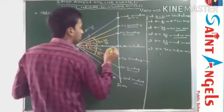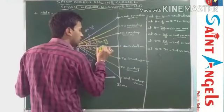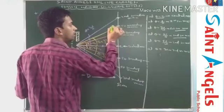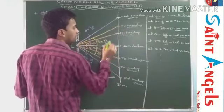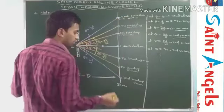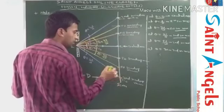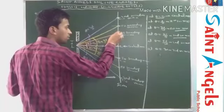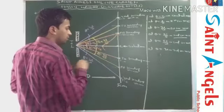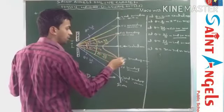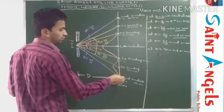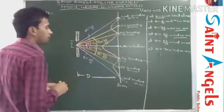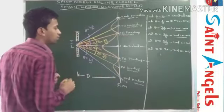Now we plot a curve: at point C intensity is maximum; at the first secondary minima positions, intensity is zero; at the first secondary maxima positions, intensity is maximum but less than central maximum; at the second secondary minima positions, intensity is zero again. This is known as the intensity distribution curve for diffraction of light.